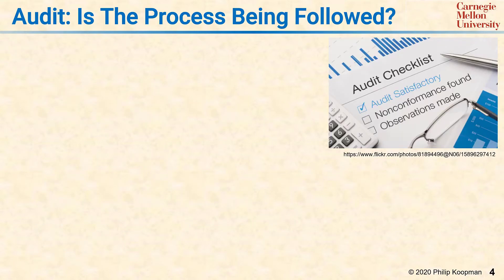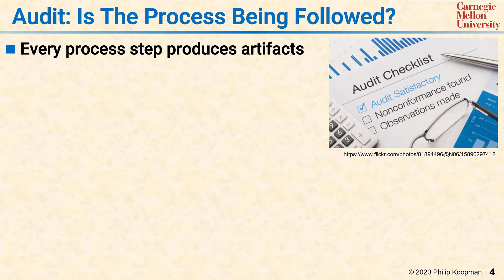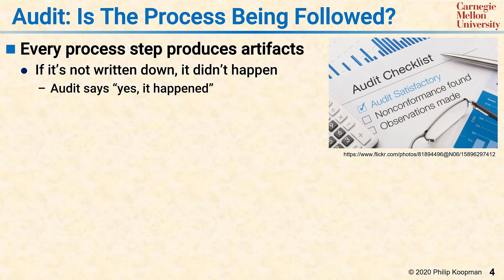Once your software process is written down and everyone's been trained and you have the right skill sets, SQA spends time on auditing whether or not the process is being followed. Doing this effectively requires looking at the artifacts, or written things, that are produced by the process. A well-defined process creates some artifact after every process step. The reason for doing this is the old saying that if it's not written down, it didn't happen. Audits allow you to say yes, it happened, because we found something written down that was produced as a result of a process step — therefore, the process step happened.